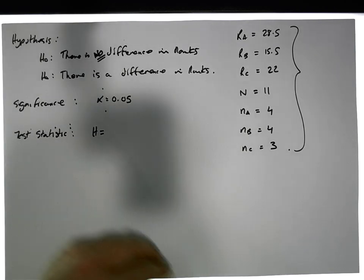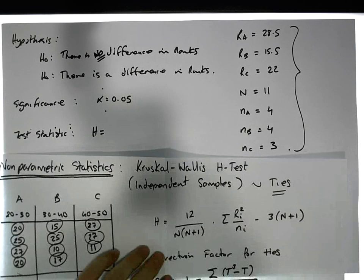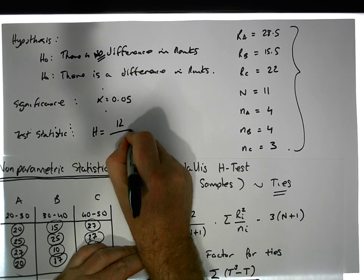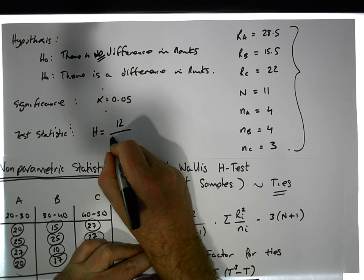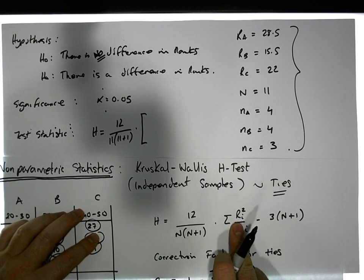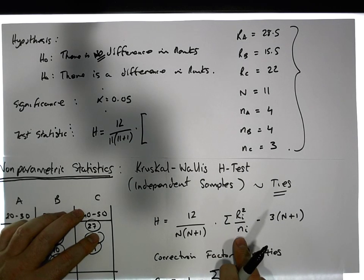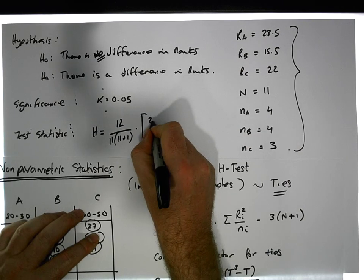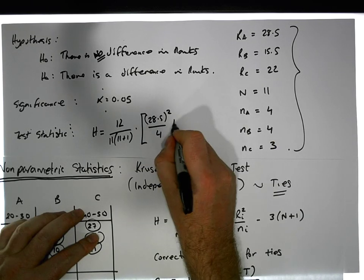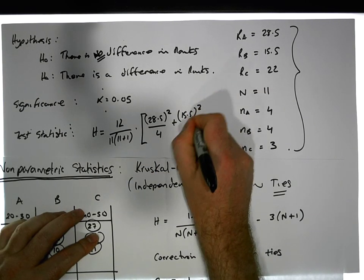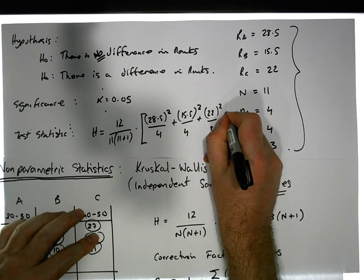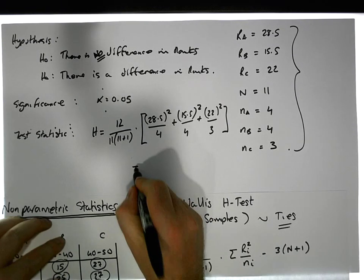The H statistic is: 12 divided by big N times (N + 1), so 12 divided by 11 times 12, multiplied by the sum of the squared rank sums for each group divided by their group sizes — that is 28.5 squared over 4, plus 15.5 squared over 4, plus 22 squared over 3 — minus 3 times (N + 1).